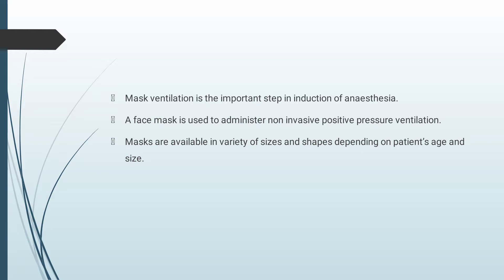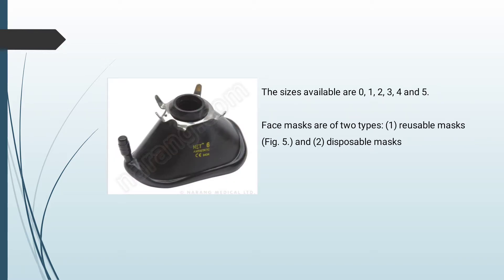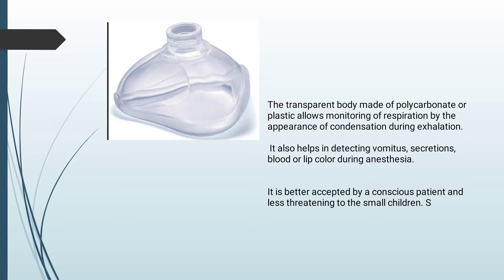Mask ventilation is the first important step in induction of anesthesia. A face mask is used to administer non-invasive positive pressure ventilation. Masks are available in a variety of sizes and shapes depending on patient's age and size. The sizes available are 0 through 5. Face masks are of two types: reusable masks and disposable masks. The transparent body made up of polycarbonate or plastic allows monitoring of respiration by appearance of condensation during exhalation. It also helps in detecting vomitus, secretions, blood, or lip color during anesthesia.